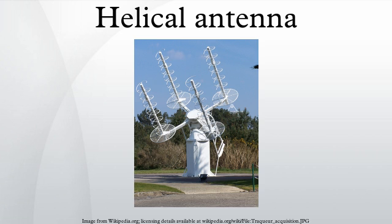Helical antennas can operate in one of two principal modes: a normal mode or axial mode. In the normal mode, or broadside helix, the dimensions of the helix are small compared with the wavelength. The antenna acts similarly to an electrically short dipole or monopole, and the radiation pattern, similar to these antennas, is omnidirectional, with maximum radiation at right angles to the helix axis. The radiation is linearly polarized parallel to the helix axis.